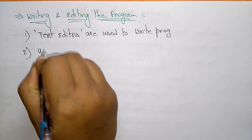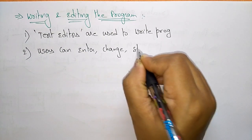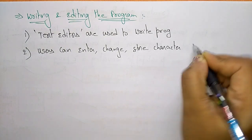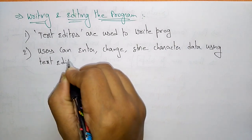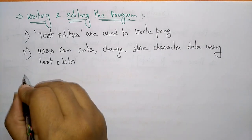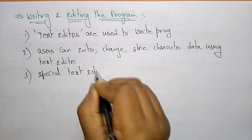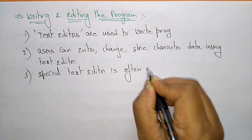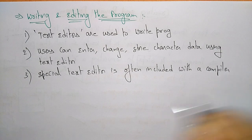Using a text editor, you can enter, change, and store character-type data. A special text editor is often included with a compiler, so if you have such a text editor bundled with the compiler, there is no need to install the compiler separately — by default the text editor will be included with the compiler files.